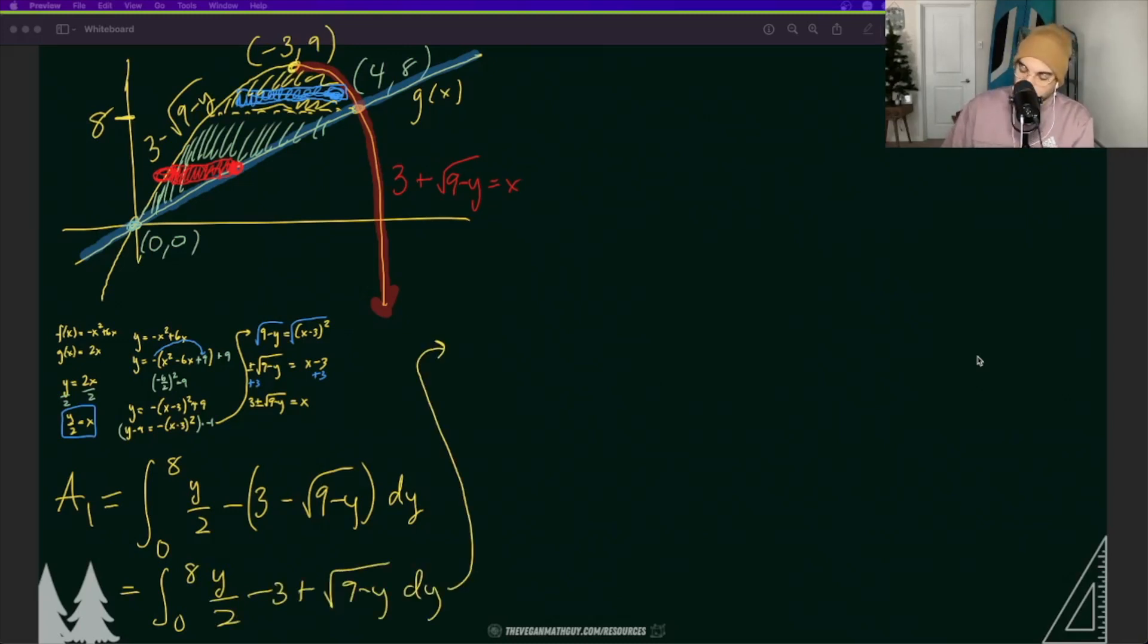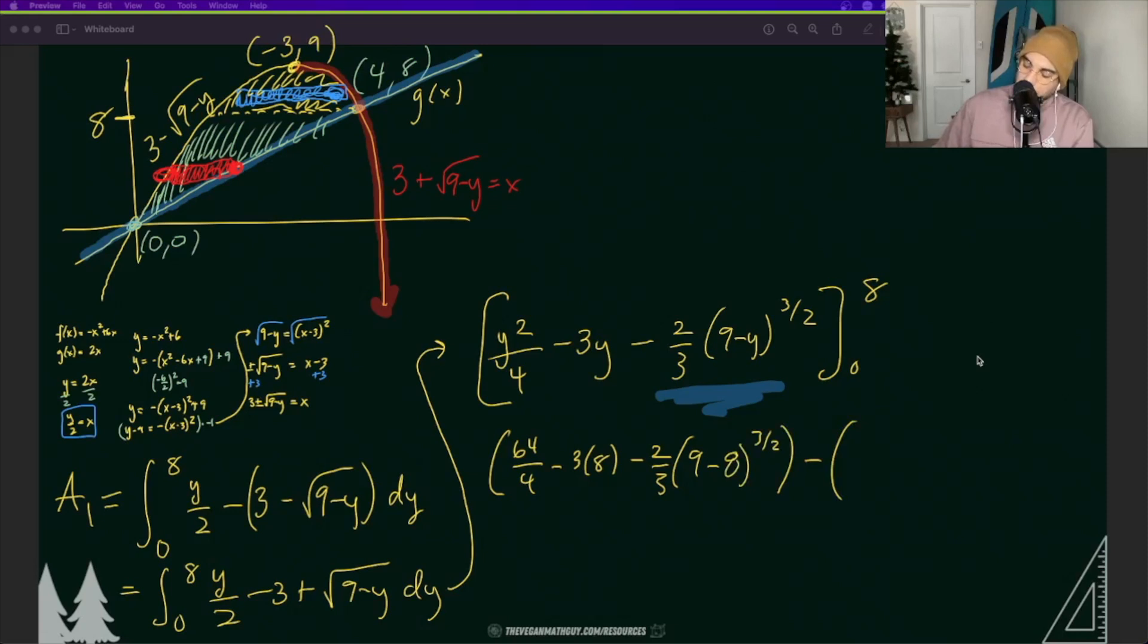If I use the first fundamental theorem of calculus this is what I'm going to get. Take close attention to how I got this value that I highlighted in blue. All I did was use substitution and I did the radical power rule. Let's go ahead and plug in eight and we'll plug in zero. It looks like my first area is 28/3.